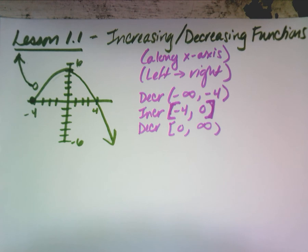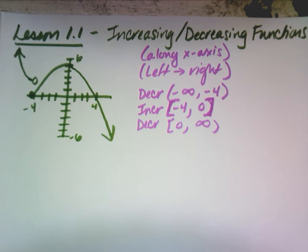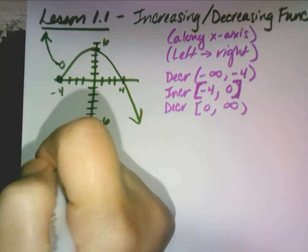They're going to ask you where the function is increasing and decreasing. They might also ask domain again, range again — you need to be able to switch back and forth in your head. For example, the domain of this piecewise is all reals, because even though there's a hole, there's also a closed point at that x. Domain is along the x, so it extends as wide as it can.